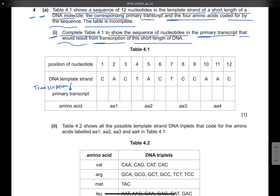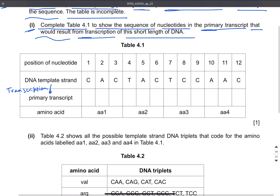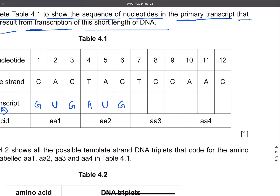Whenever transcription occurs and we go from the DNA template strand to the primary transcript, there is complementary base pairing. C on DNA pairs with G on the primary transcript. A will pair with U on the primary transcript because primary transcript is RNA and RNA does not contain thymine. So A pairs with U, C pairs with G, T pairs with A, and C pairs with G throughout the sequence.